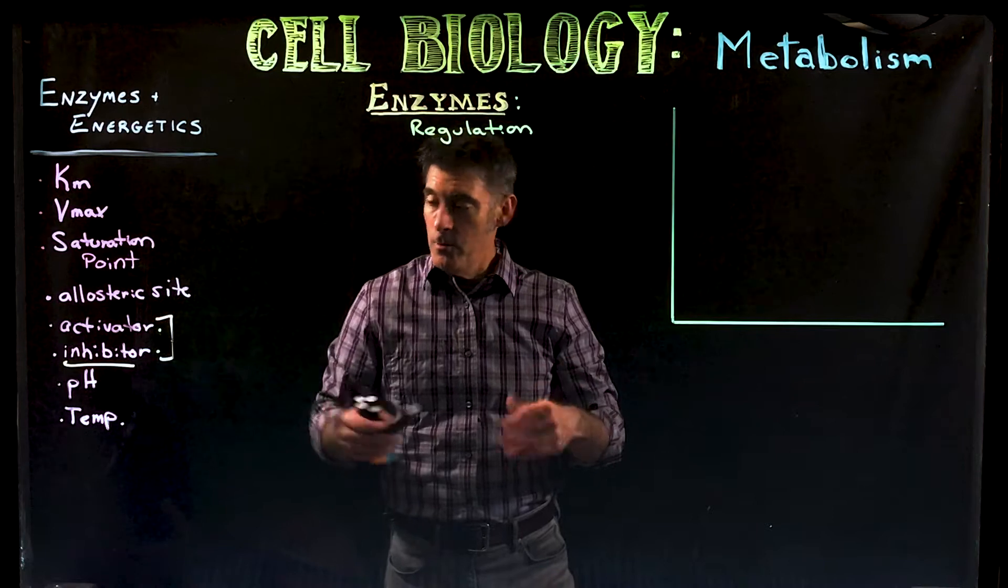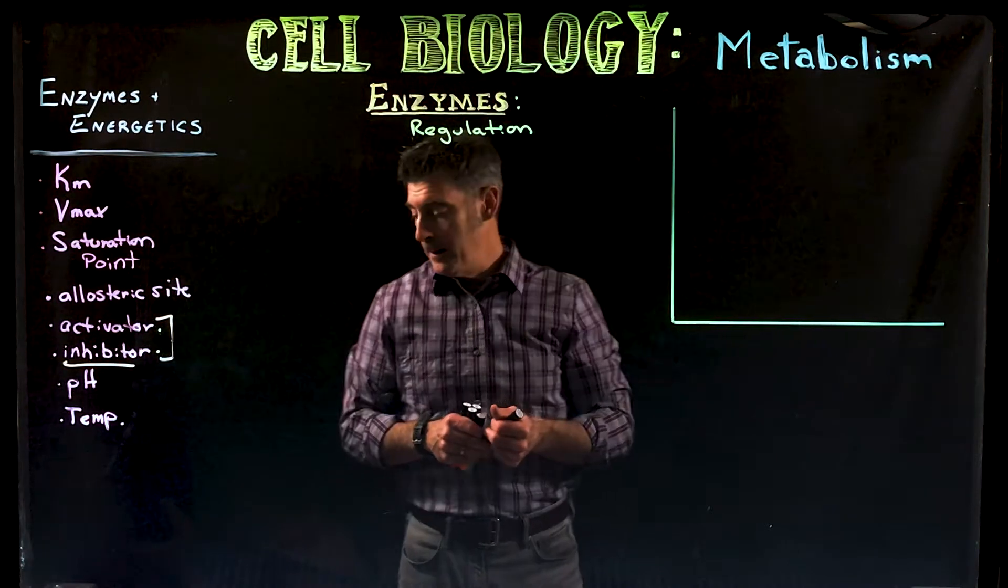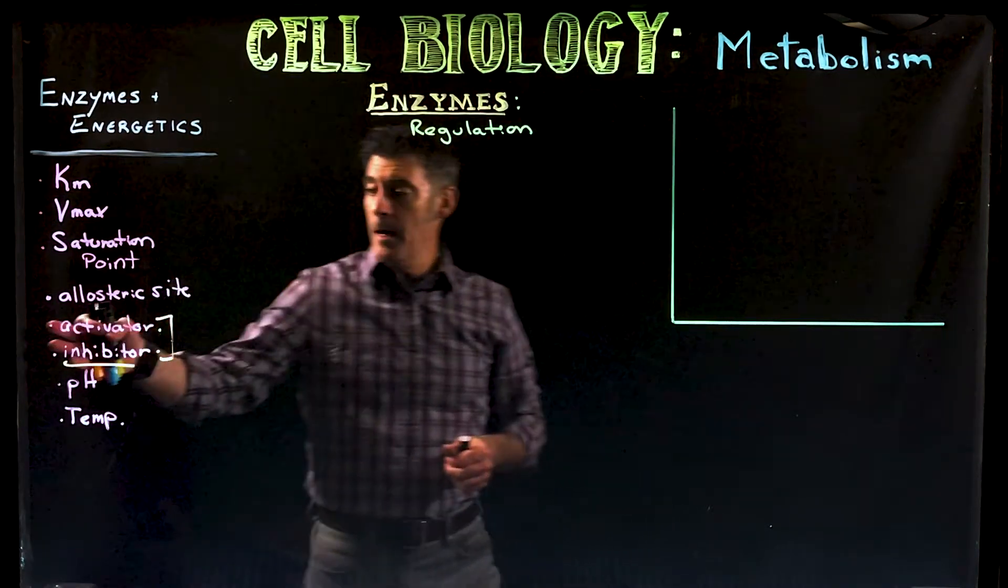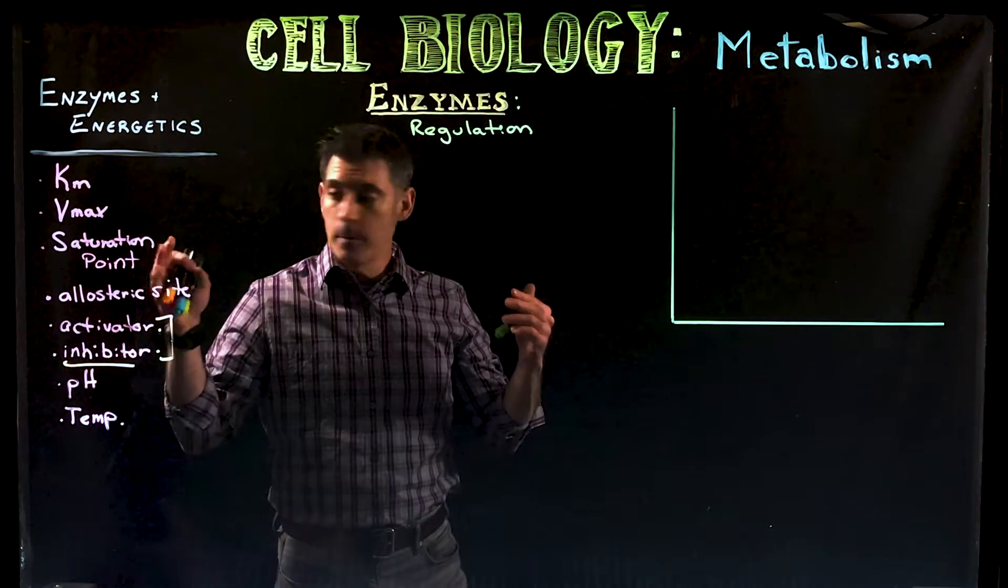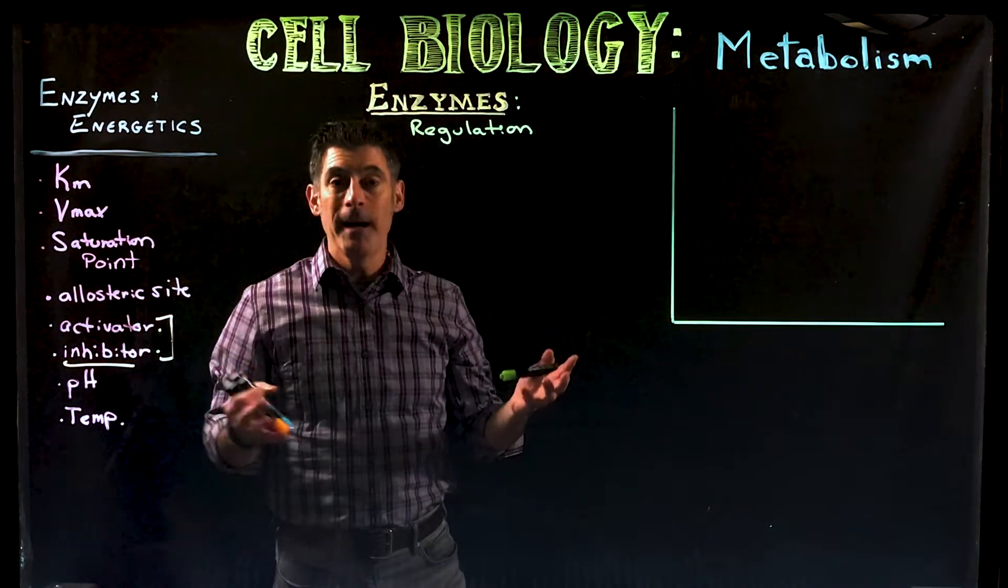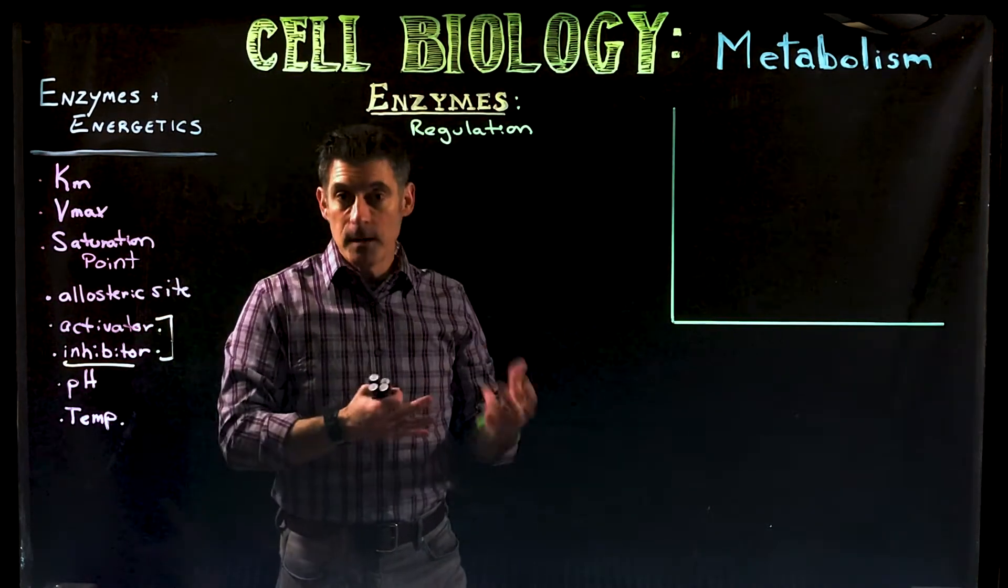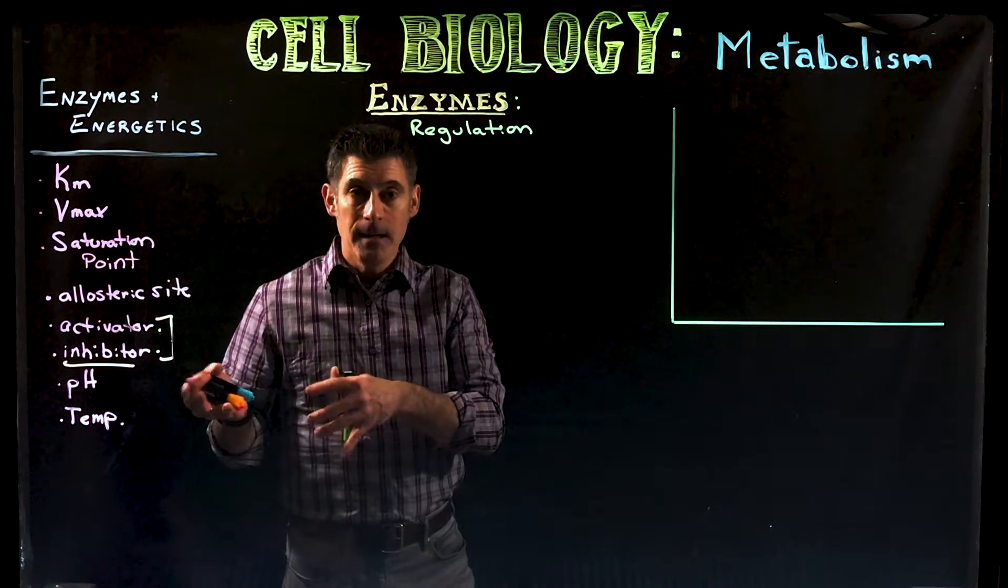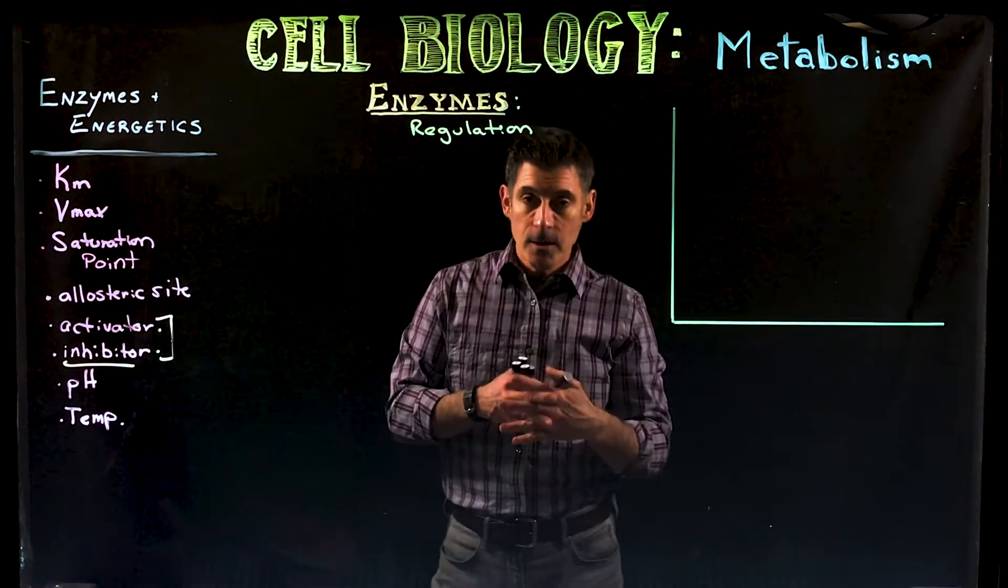And I've listed over here two environmental characteristics versus chemical characteristics. So we have molecules that can bind to enzymes and either speed them up, help them work better. We have molecules that can bind to enzymes and slow them down or shut them down completely.